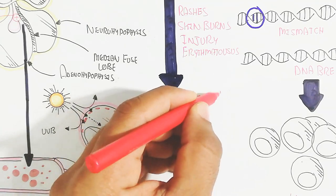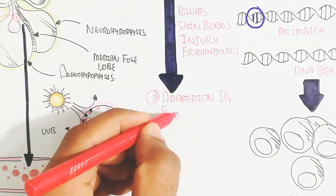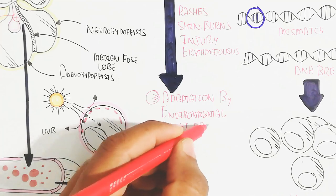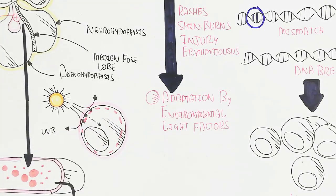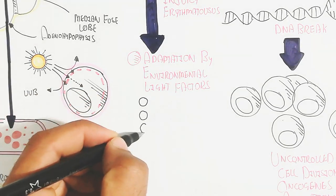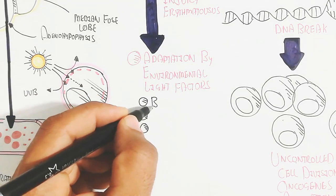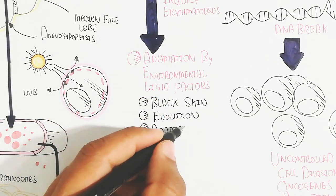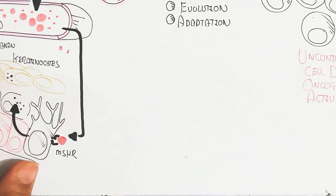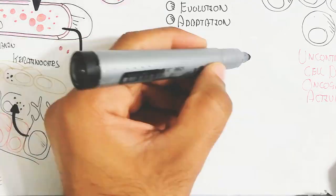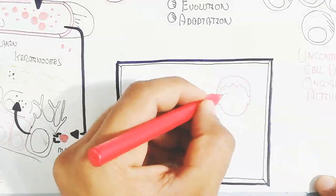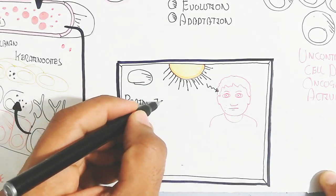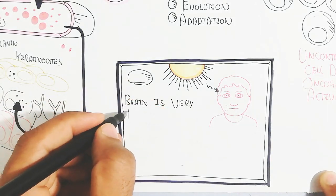In terms of adaptation, environmental light factors drive adaptation through darker skin. Over generations, evolutionary adaptation increases tanning, improving adaptability and survivorship in hotter climates.